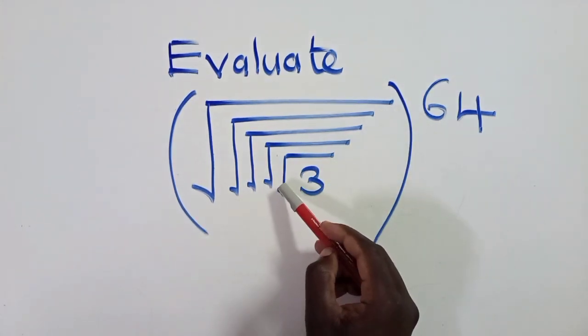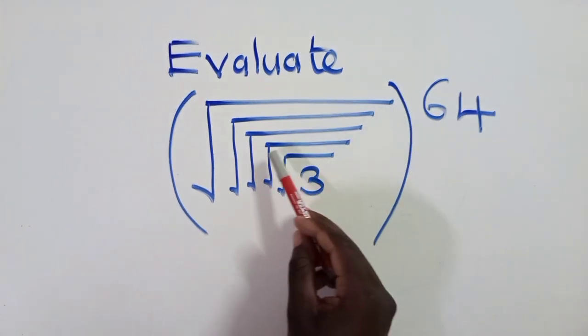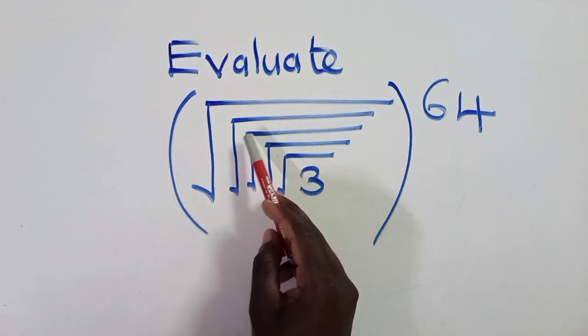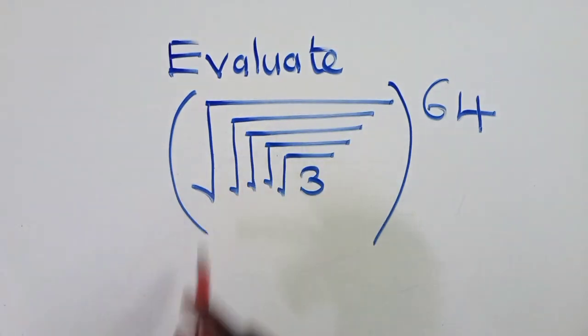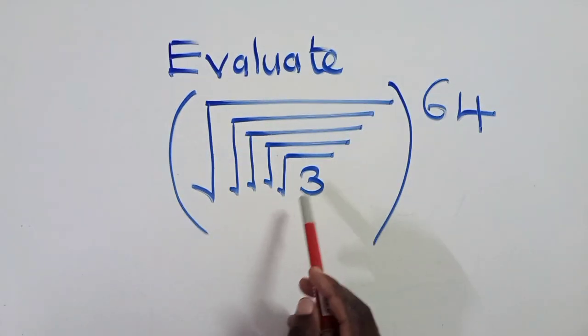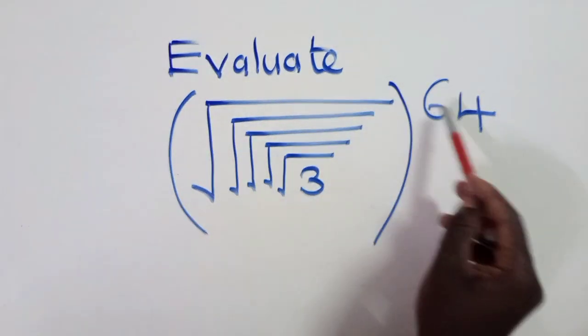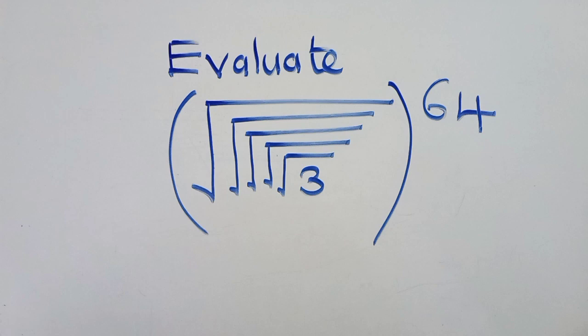We have a square root of 3, with square root, square root, square root, square root — there are 5 of them. And to the power 64.